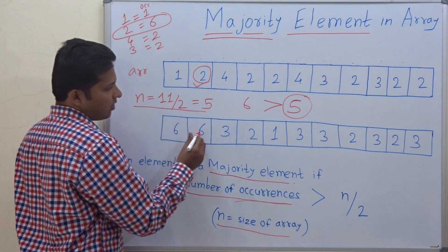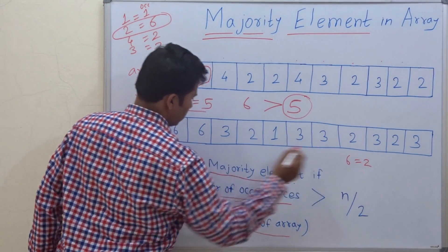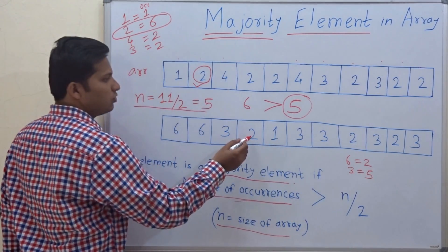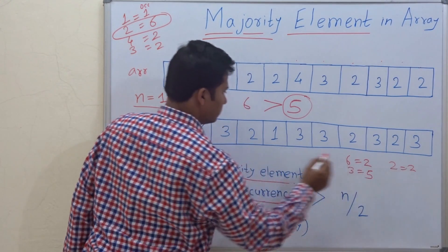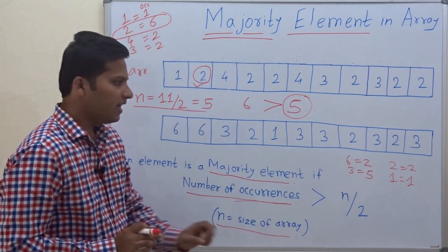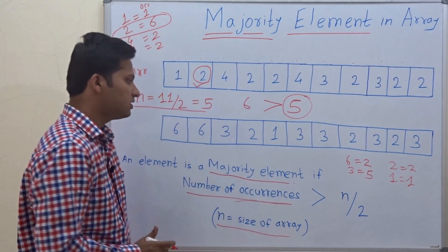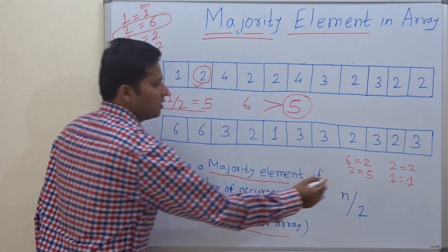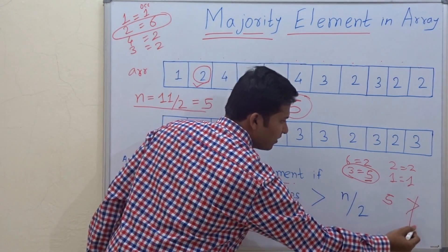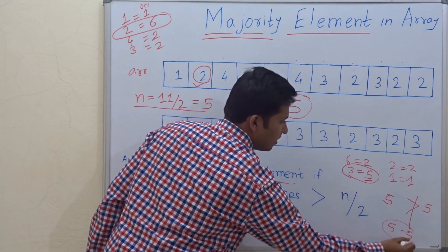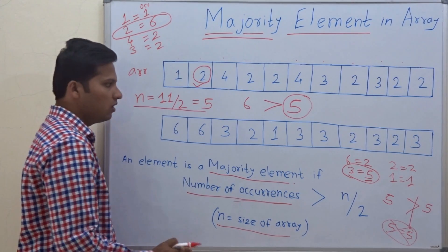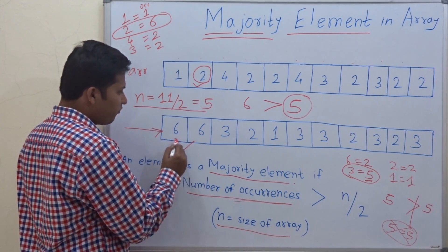Now let's look at this second array. Here 6 occurs 2 times, 3 occurs 5 times, 2 occurs 2 times, and 1 occurs 1 time. So in this array, 3 is occurring 5 times, but 5 is not greater than 5 — 5 is equal to 5. The majority element condition requires the number of occurrences to be strictly greater than n/2.